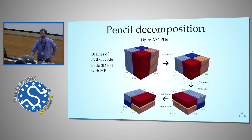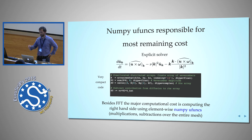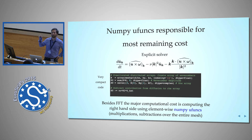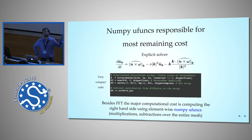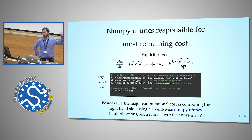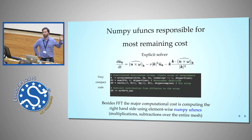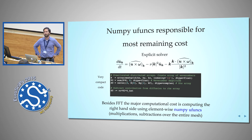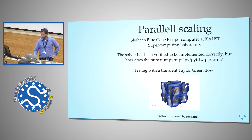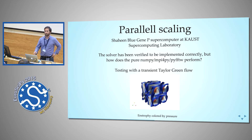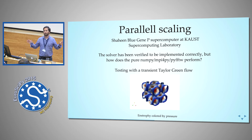If you look at the rest of the equation I'm trying to solve, besides the Fourier transform, all you really have to do is multiply large arrays with each other and subtract them. All in all, it's just NumPy — use universal functions. NumPy ufuncs are functions that loop over the entire computational mesh every time they're called. This is basically what it takes to build this solver.